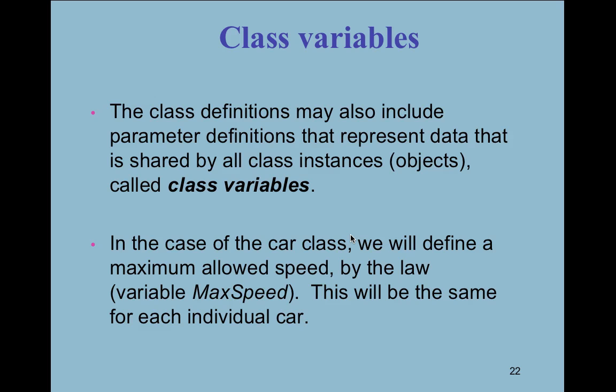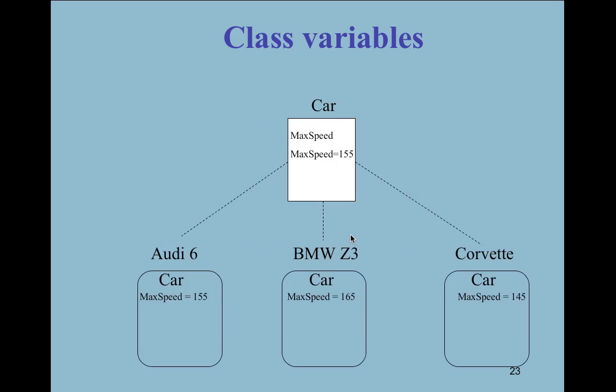In the case of the car class, you can define a maximum allowable speed by law using a class variable. The government does this — it changes the speed limit, so now all instances can't exceed, say, 65 mph. Someone from the class level comes down and sets the maximum value for all instances.